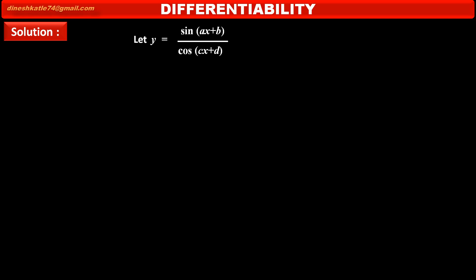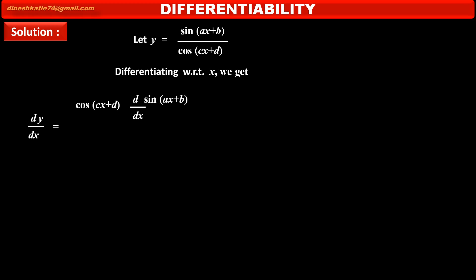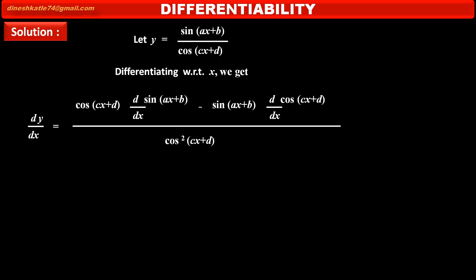Let y be equal to the given function sin(ax + b) upon cos(cx + d). Differentiating this with respect to x, we get dy/dx, that is derivative of y with respect to x. According to the formula: denominator cos(cx + d) as it is, into derivative of numerator sin(ax + b) with respect to x, minus numerator sin(ax + b) into derivative of denominator cos(cx + d) with respect to x, upon denominator cos(cx + d) square.